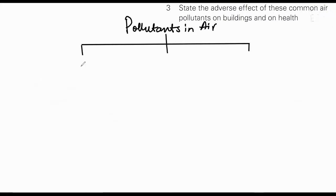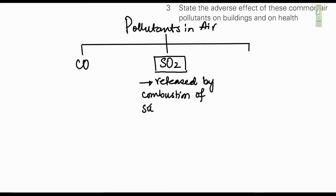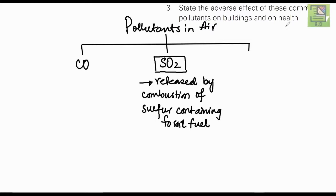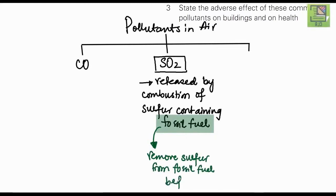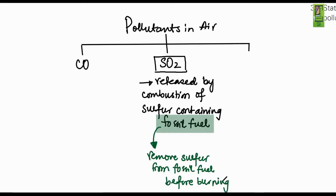We have discussed three air pollutants. Carbon monoxide's adverse health effects are already covered. Sulfur dioxide is released by burning sulfur-containing fossil fuels. To prevent excessive sulfur dioxide emissions, we can remove sulfur from the fossil fuel before combustion — before burning it. This reduces sulfur dioxide released into the air.